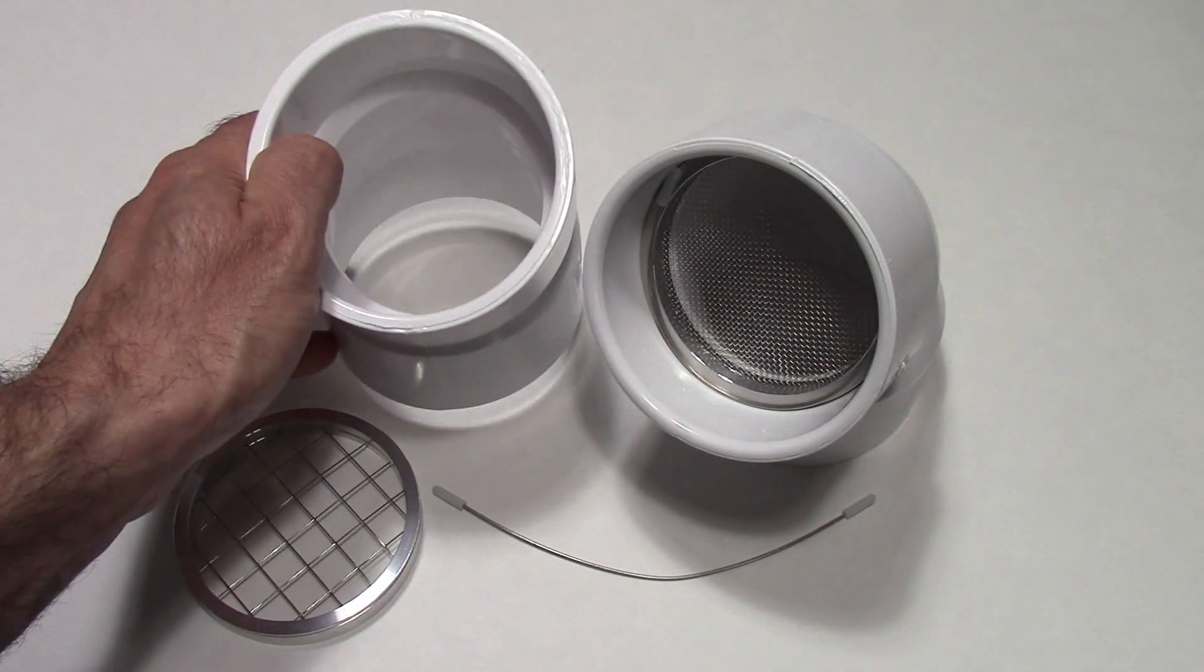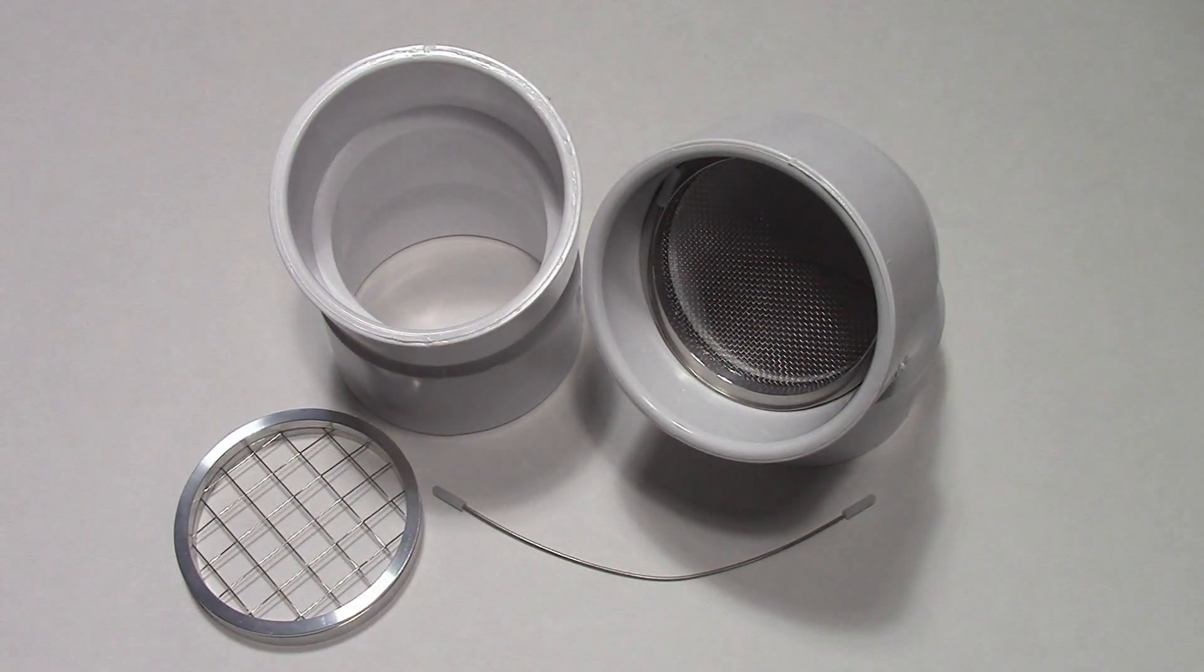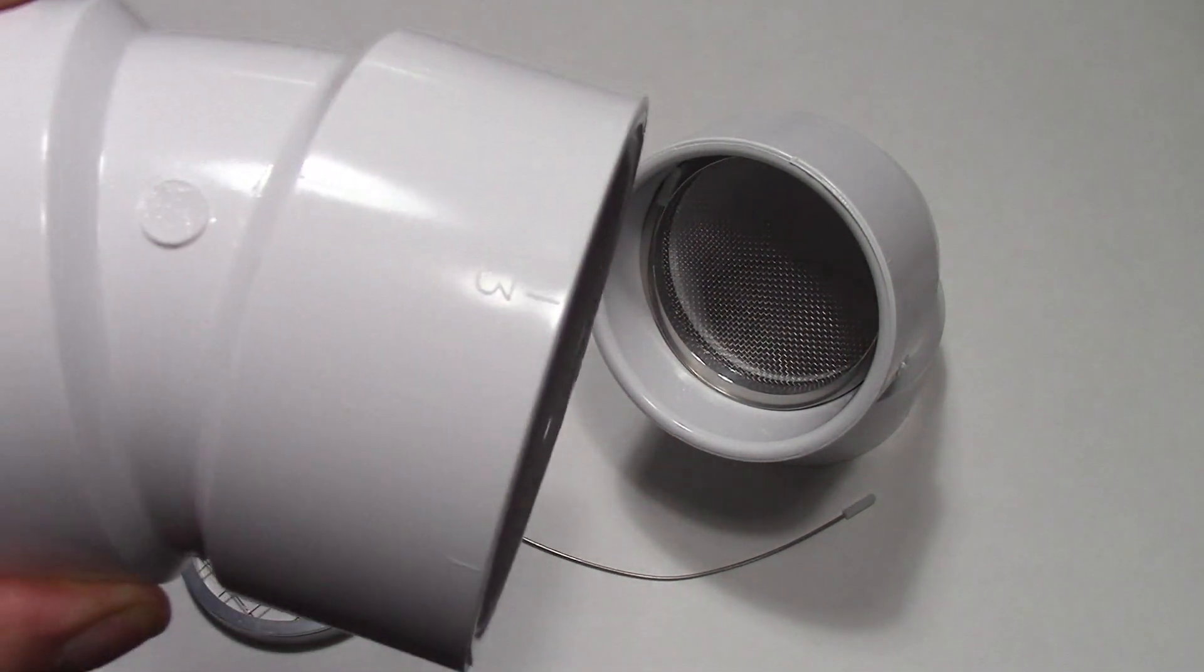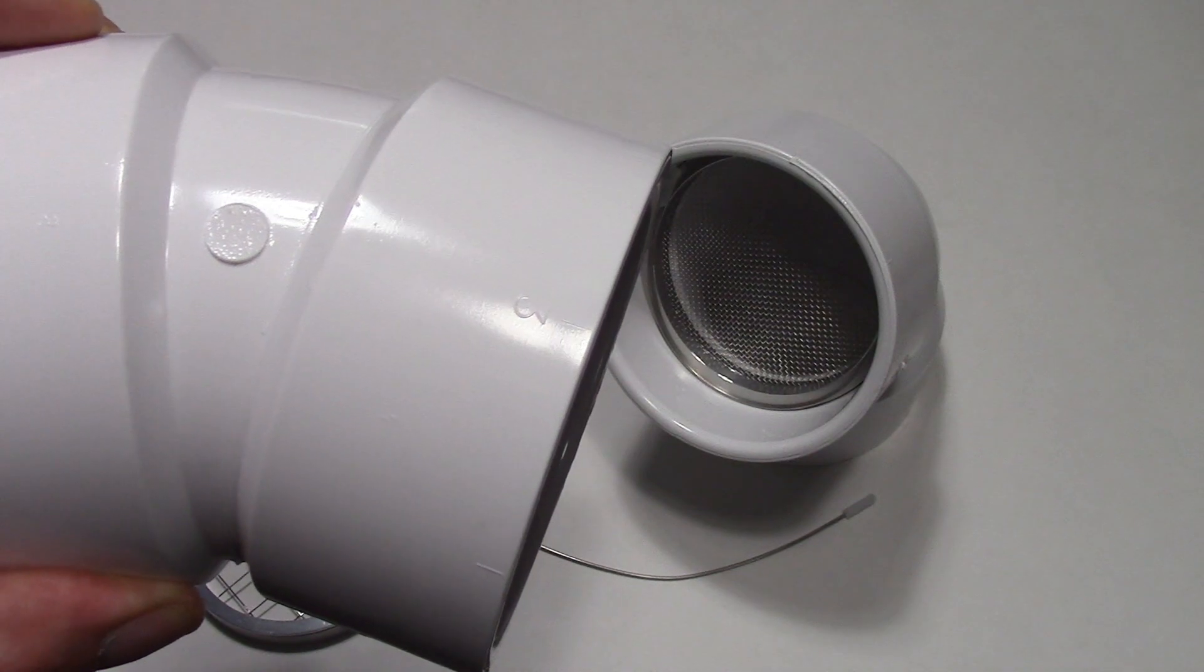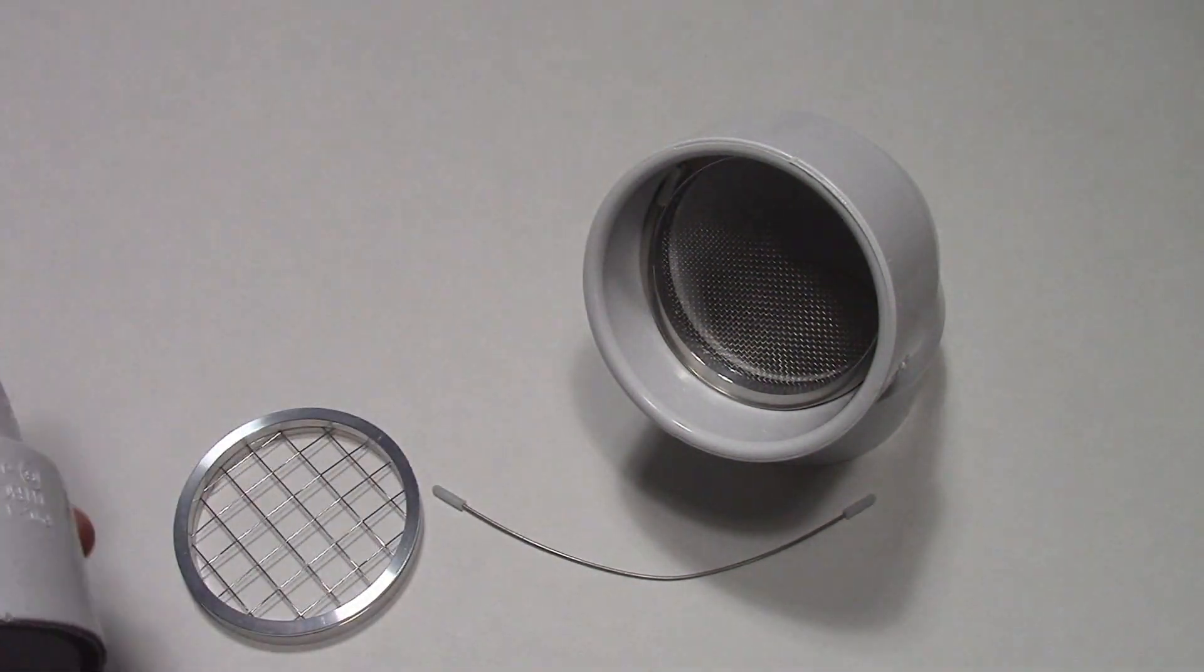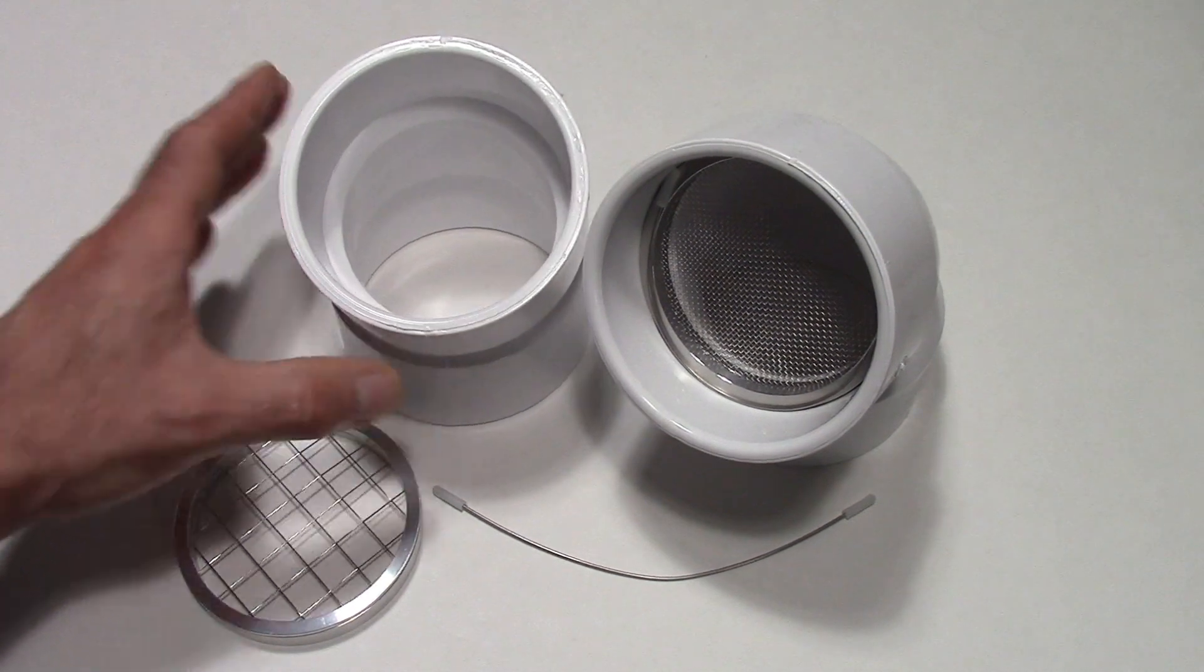Before you begin you want to make sure that the appliance is turned off and that you put safety glasses on. Most vent terminations point downward and you definitely don't want any debris getting into your eyes, so make sure you wear safety glasses and read the instructions that are supplied.